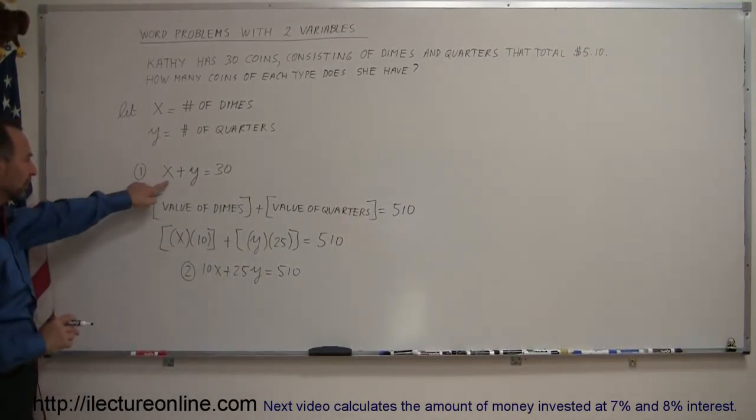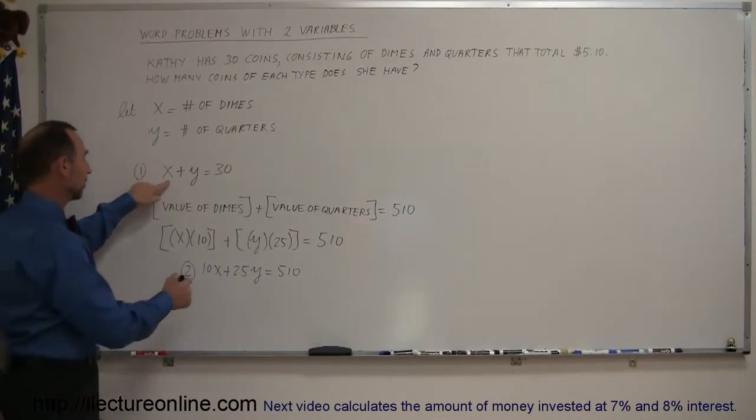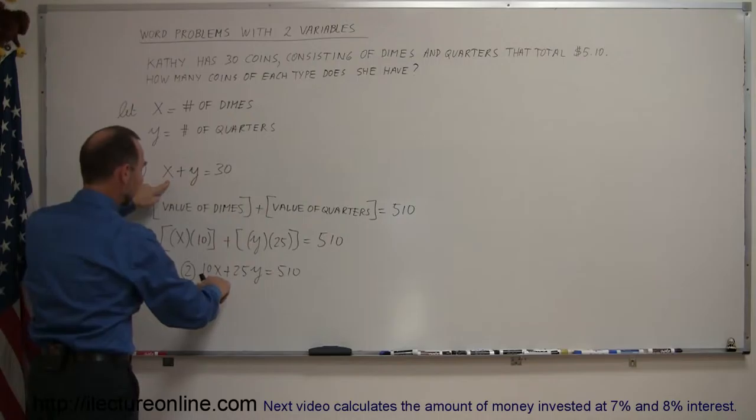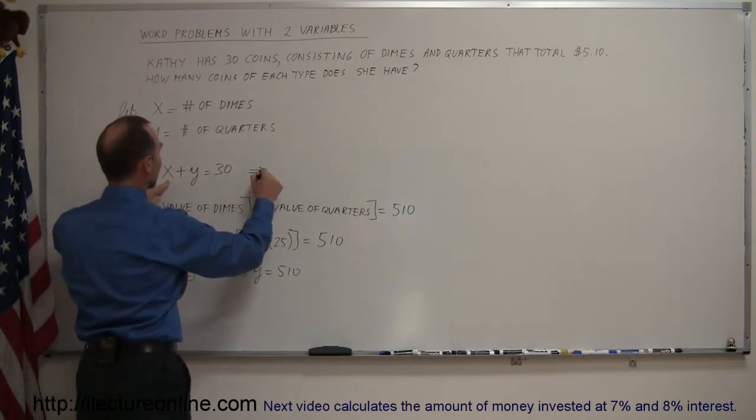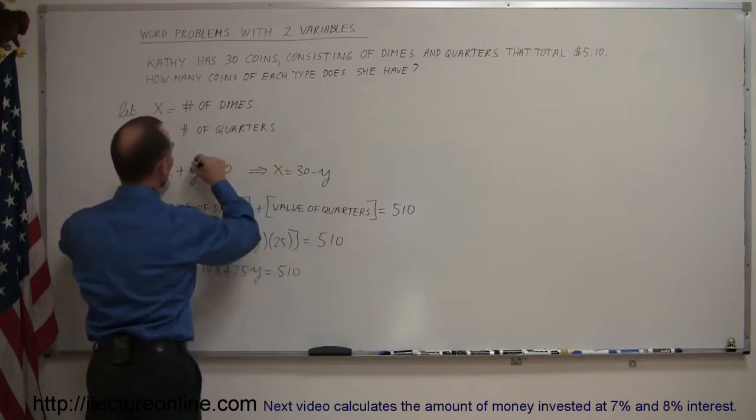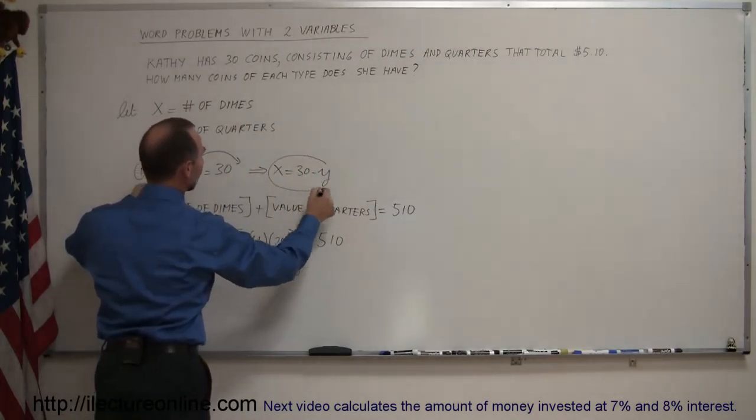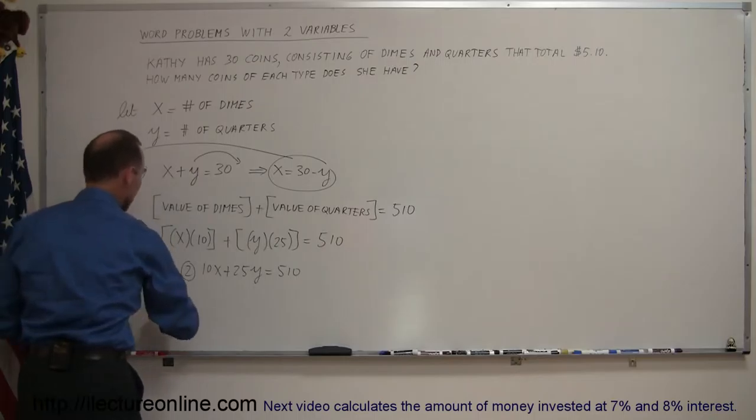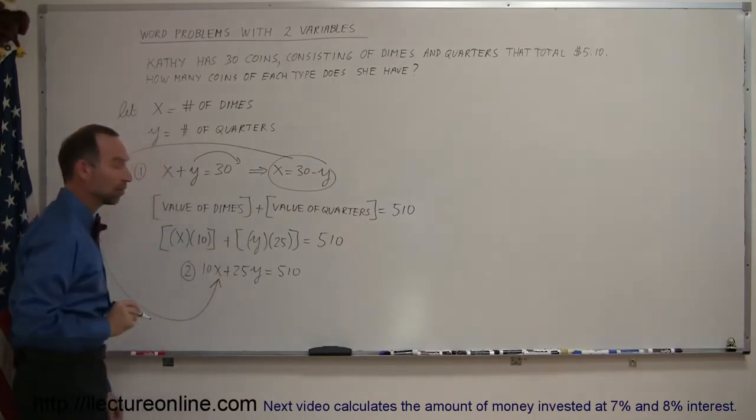What I'm going to do is on this one, I'm going to solve this equation for either x or y, let's solve for x, and then substitute that in for the x that we have over here. So here we can write that x equals 30 minus y, by bringing the y across to the other side, it becomes minus y, and then we take this and substitute that into the x into our second equation.